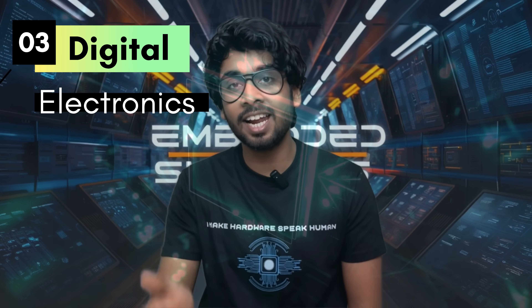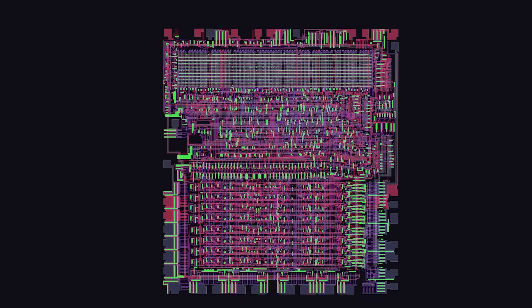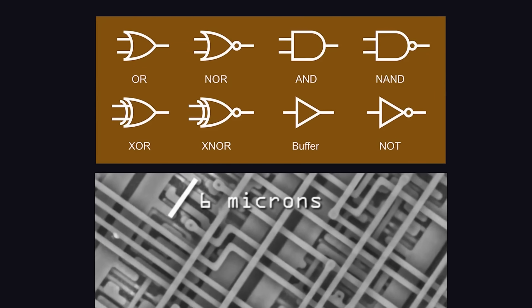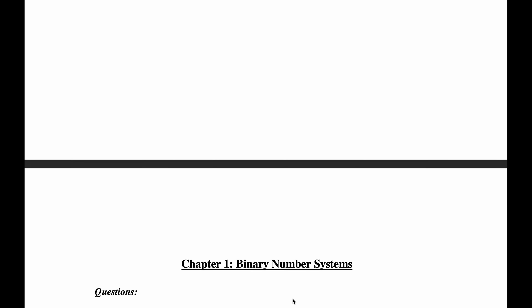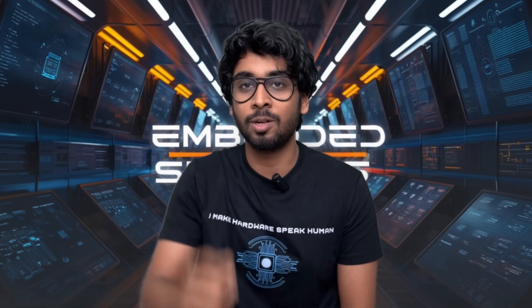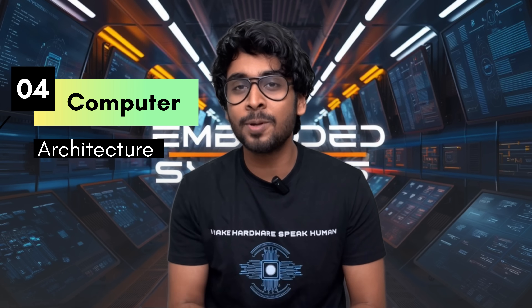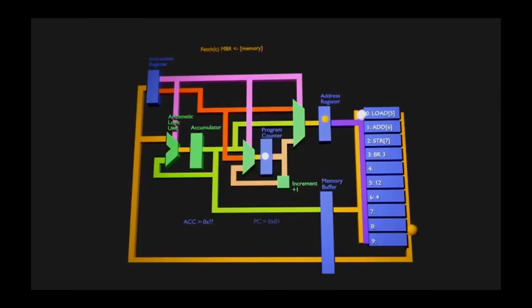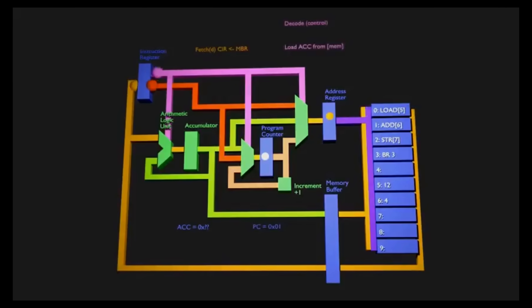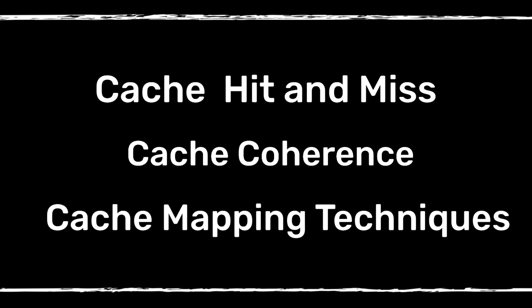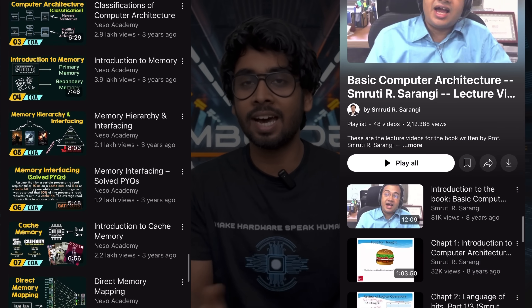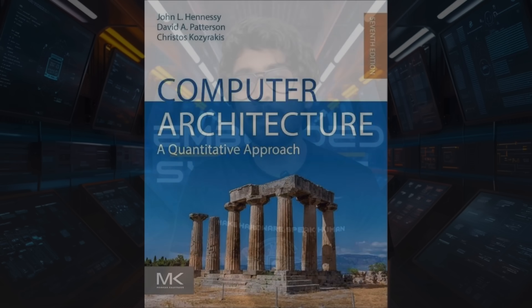The next topic is digital electronics. All the processors we use today use digital concepts, and to understand a processor in depth you need to know the basics like logic gates, flip-flops, counters, and efficiency — it helps you understand what's exactly happening on your chip. As a fresher, you definitely have to master it to clear written tests. Then the next topic is computer architecture. To use any processor, you need to know how it works from the inside. Mainly focus on cache concepts like hit and miss, cache coherence, and different cache mapping techniques.